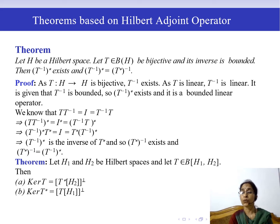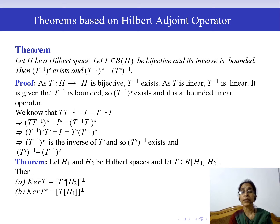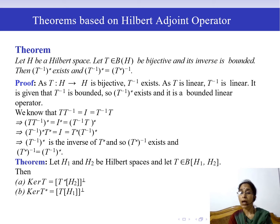We know that T∘T⁻¹ = I = T⁻¹∘T. Taking Hilbert adjoint operators, (T∘T⁻¹)* = I* = (T⁻¹∘T)*. Since I is self-adjoint, I* = I. We know that (T∘T⁻¹)* = T⁻¹* ∘ T*, taking adjoint operators in reverse order. So T⁻¹*∘T* = I, meaning T⁻¹* is the inverse of T*, hence (T*)⁻¹ exists and equals T⁻¹*.